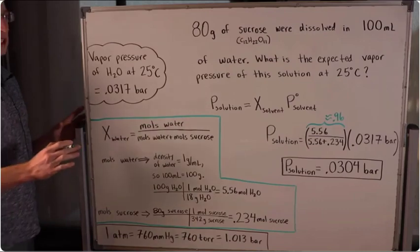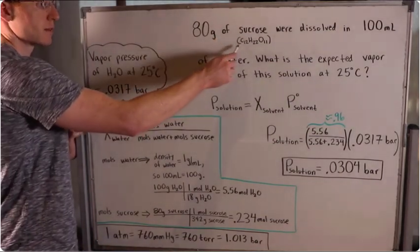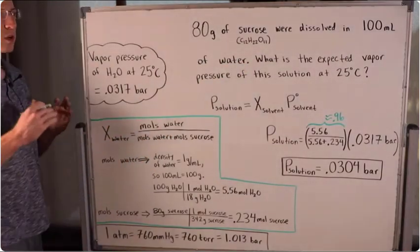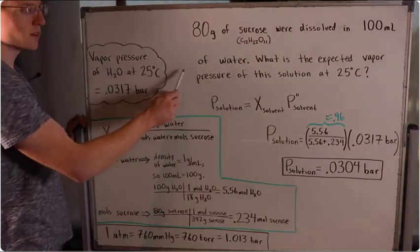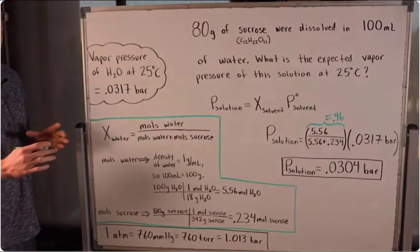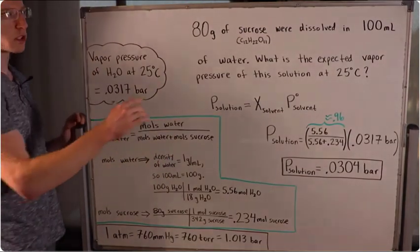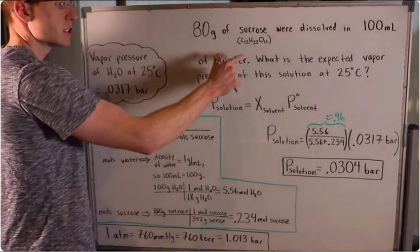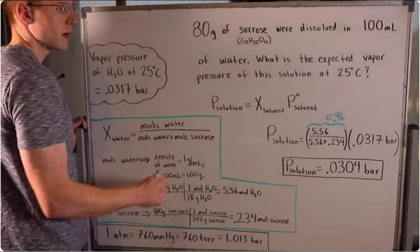Let's do an example problem. 80 grams of sucrose were dissolved in 100 milliliters of water. What is the expected vapor pressure of this solution at 25 degrees Celsius? This is clearly a Raoult's Law problem, because we're dissolving a solute into a solvent — water — and we're asked about the vapor pressure.